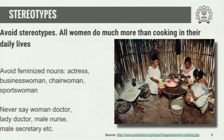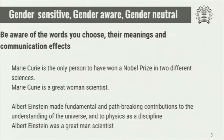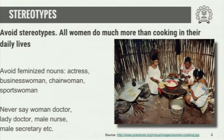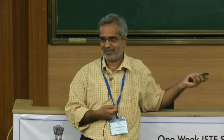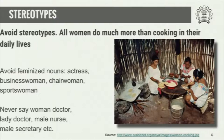Stereotyping is something we should avoid in our communication. Saying 'Marie Curie is a great woman scientist' indicates that most scientists are men and she is an exception — that is an effect of stereotyping in our minds. Most women do many things, not only cooking. These kinds of feminized nouns — like 'actress' when talking about the profession — are unnecessary unless you want to draw attention to gender. You can just say 'actor' to refer to both men and women. Similarly, 'chairwoman,' 'sportswoman,' and 'businesswoman' needlessly point to gender. When you bring in gender unnecessarily, that is stereotyping.